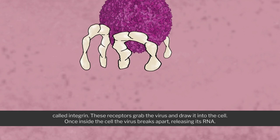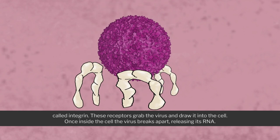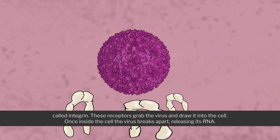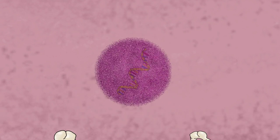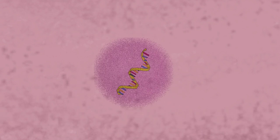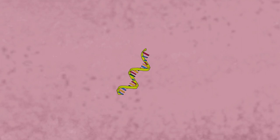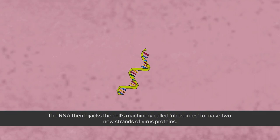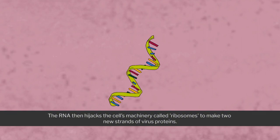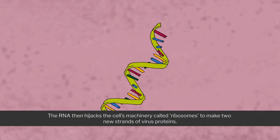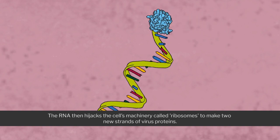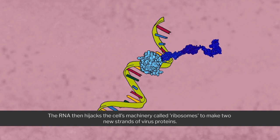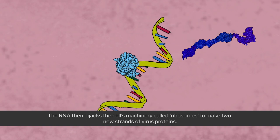Once inside the cell, the virus breaks apart, releasing its RNA. The RNA then hijacks the cell's machinery, called ribosomes, to make two new strands of virus proteins.